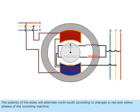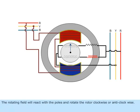The polarity of the poles will alternate north-south according to changes in red and yellow phases of the incoming machine. The rotating field will react with the poles and rotate the rotor clockwise or anticlockwise.